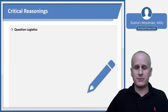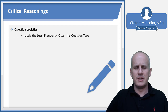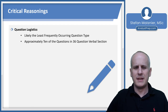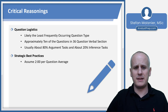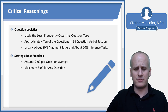Let's recap the logistics for critical reasoning in the verbal section. This is going to be the least frequently occurring question type in the verbal section. You're going to have approximately 10 of the 36 questions that will be critical reasoning. Usually about 80% deal with argument tasks and about 20% deal with inference tasks. Strategically, remember to assume about two minutes per question on average.